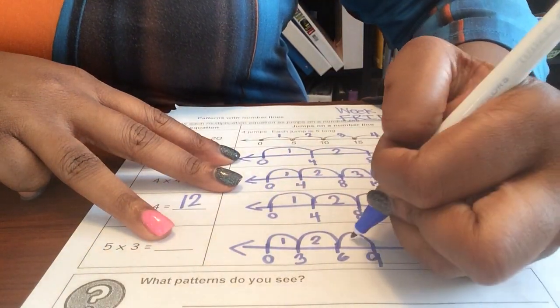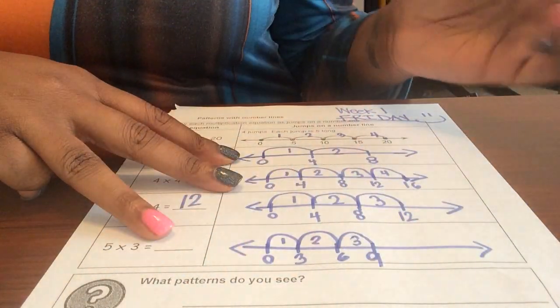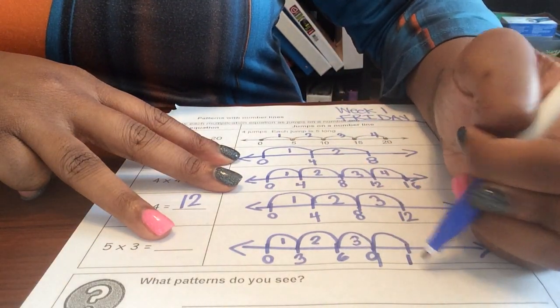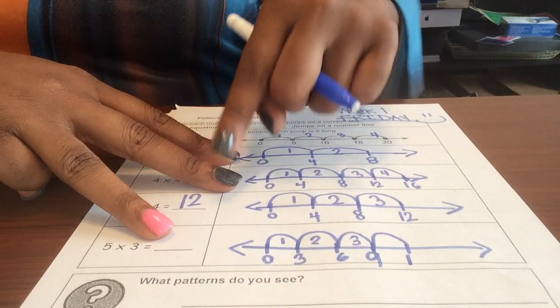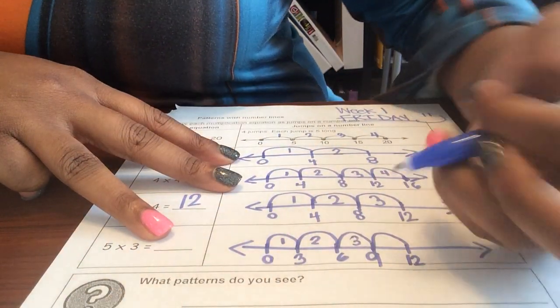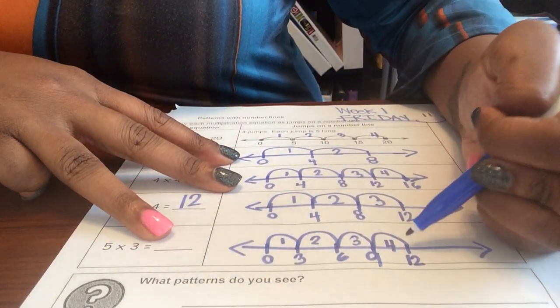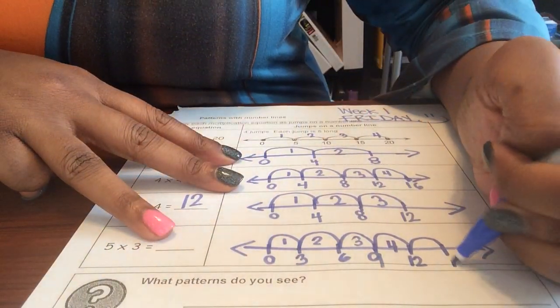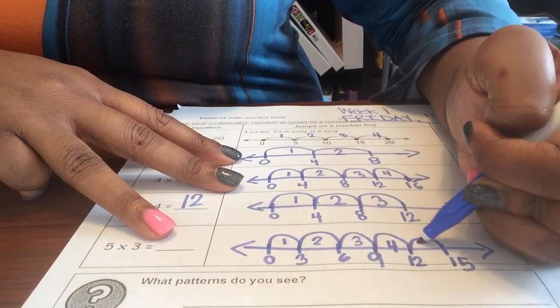I'm sorry, I didn't count here. Nine, ten, eleven, twelve, that's four jumps. Oh, we got one more jump. Twelve in your head: thirteen, fourteen, fifteen, and that's the fifth jump.